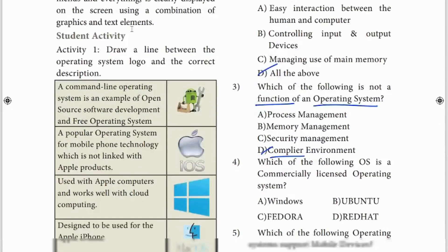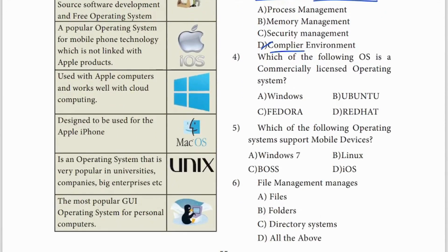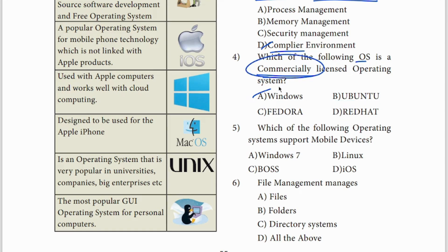Fourth question: which of the following OS is commercially licensed? Most people use Windows on laptops. So commercially licensed OS - the answer is Windows. Ubuntu, Fedora, Red Hat are open source and free. So for commercial, Windows is the answer.